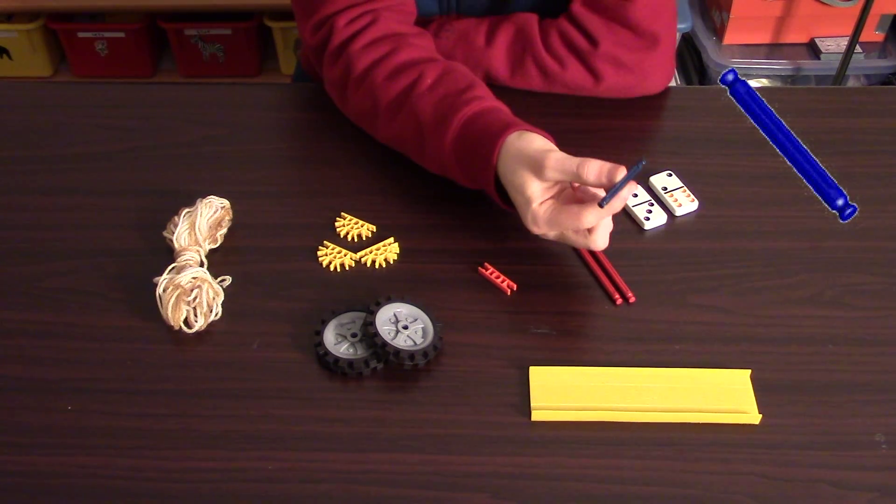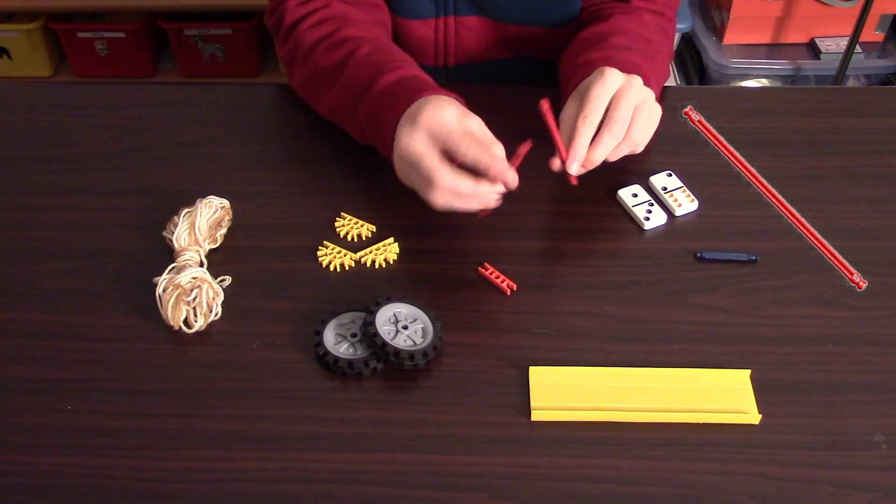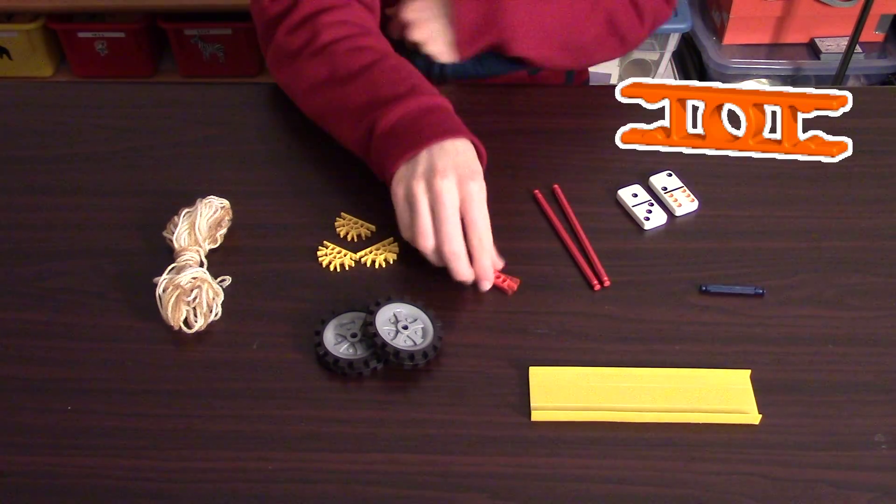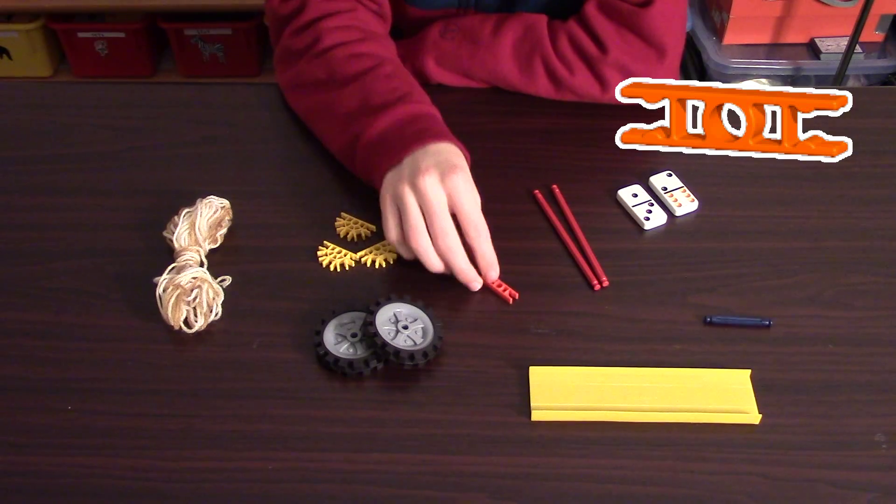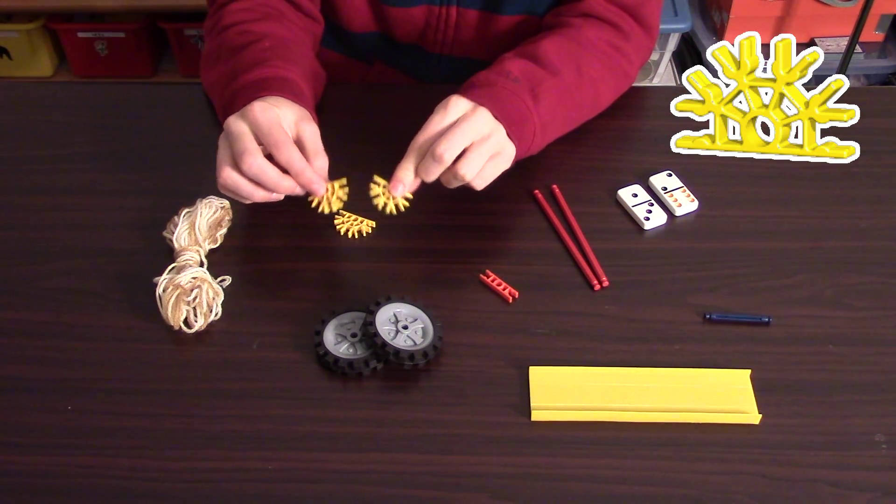Now onto the Knex pieces themselves. You're going to need one blue rod, two long red rods, one orange connector, and three yellow connectors.